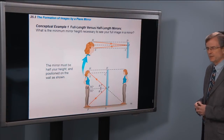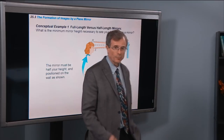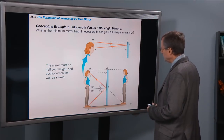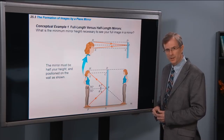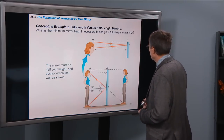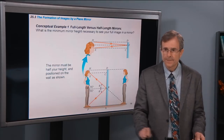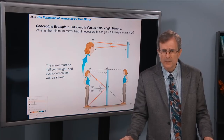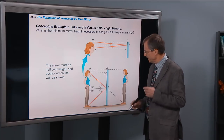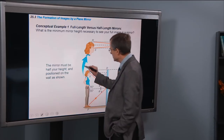Full length versus half length mirrors: if you want a full length mirror to see yourself completely, you need a mirror that goes from floor to your height — right? Wrong. You actually only need a mirror that's half your height. If placed on the wall in exactly the right position, you'll be able to see your whole body with a mirror that's only half your height.